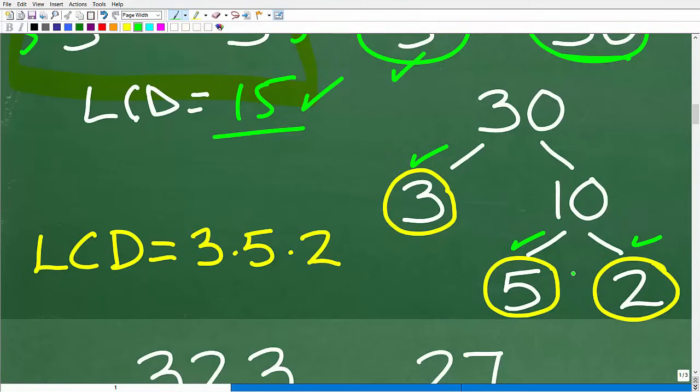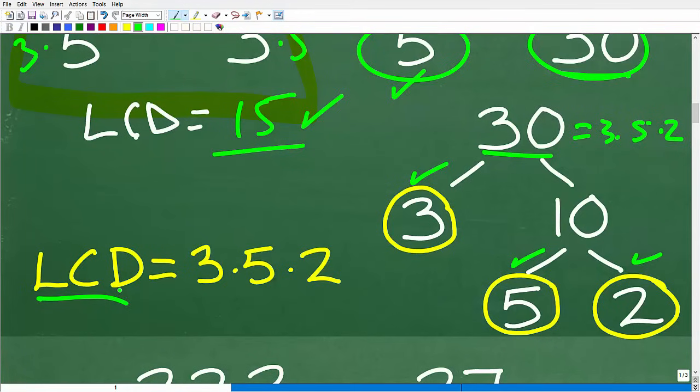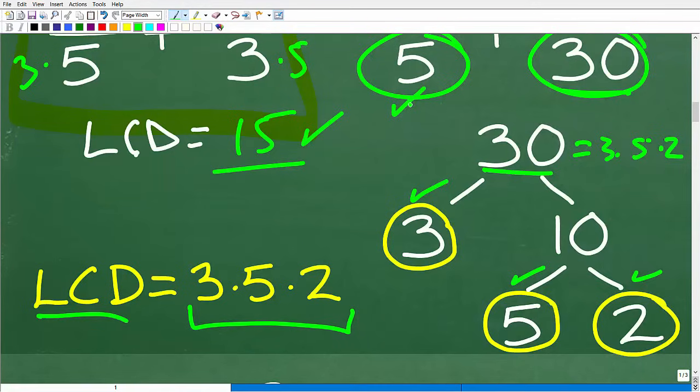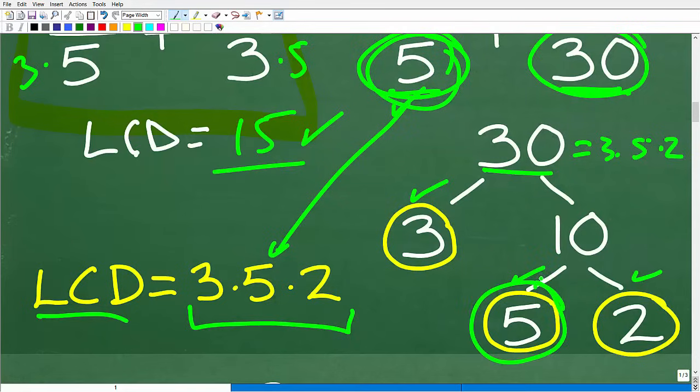So here are all the prime factors of 30, okay? So 30 is equal to 3 times 5 times 2. Now, the LCD is basically, and I'm kind of quickly reviewing this, but it has to represent or has to have all the prime factors of both, or you know, if you have two denominators or three or four, it doesn't make a difference. Basically, all the prime factors of the respective denominators. So we have a 5 here, okay? So that has to be in our LCD as a factor. So we also have a 5 right here, okay? Our 30 has a 5 as a prime factor.